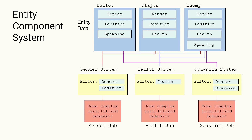We'll see a code example of this so you can get an idea of exactly what I'm talking about. The first thing to understand is that we have these concepts of Entities. You can see I have three listed at the top of the screen: Bullet, Player, Enemy. These Entities aren't game objects — they're not containers. An Entity is really just a reference to data, and this data comes in the form of Component Data or Entity Data. My Bullet has some Render Data, Position Data, Spawning Data. Enemy has Render, Position, Health, and Spawning.